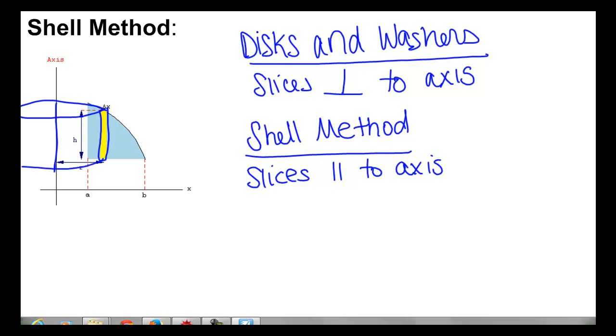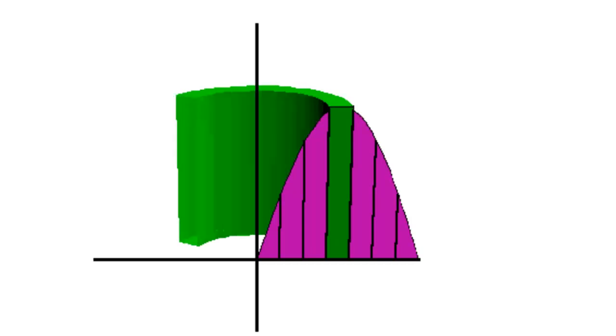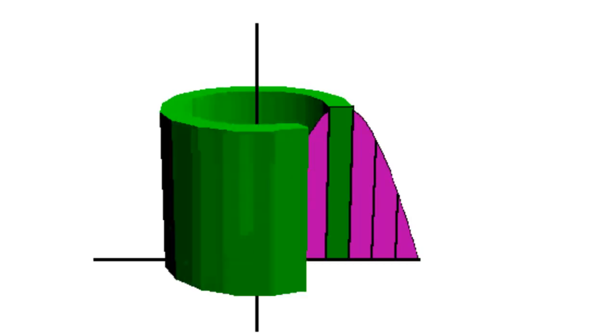Now, I'm not the best artist, so let's look at a rendering here. So we take a typical rectangle, and as we revolve it around, what you can see is that you get a very, very thin cylinder, kind of like the wrapper on a soup can.